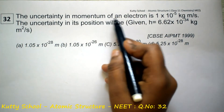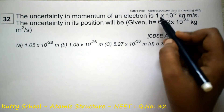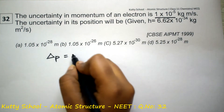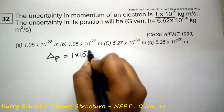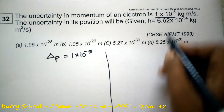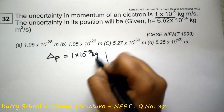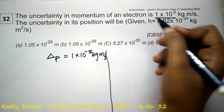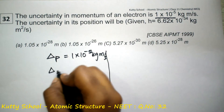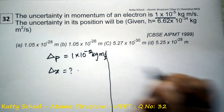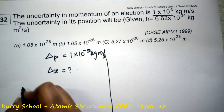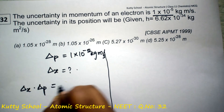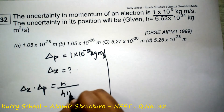The uncertainty in the momentum of an electron is equal to 1 × 10⁻⁵ kg·m/s. The uncertainty in its position will be — position is equal to Δx. The formula is: Δx · Δp = h / 4π.